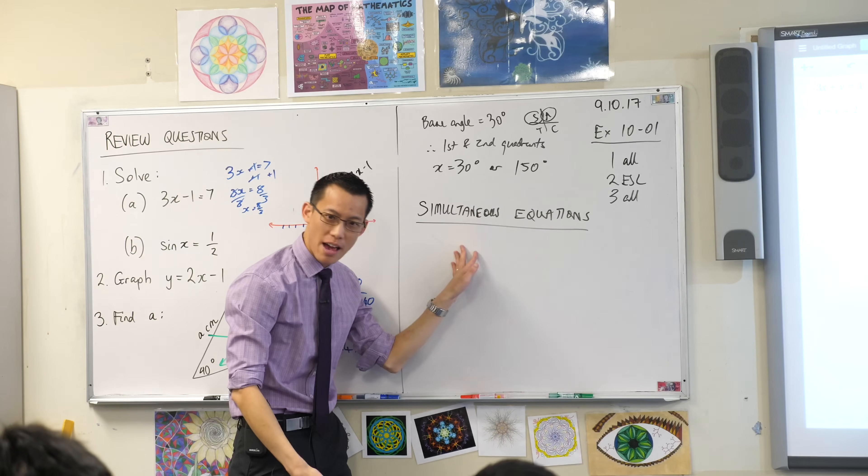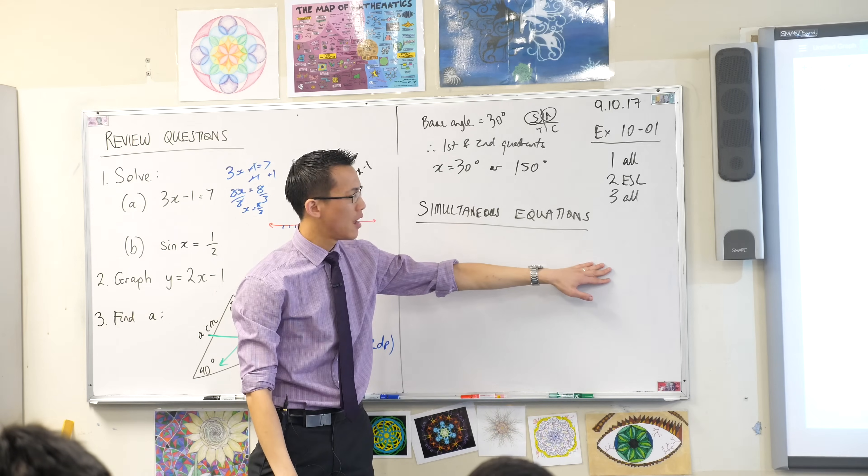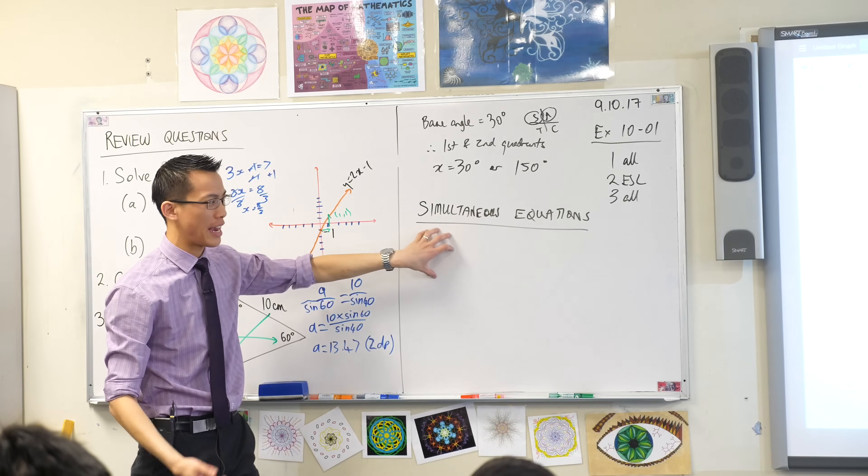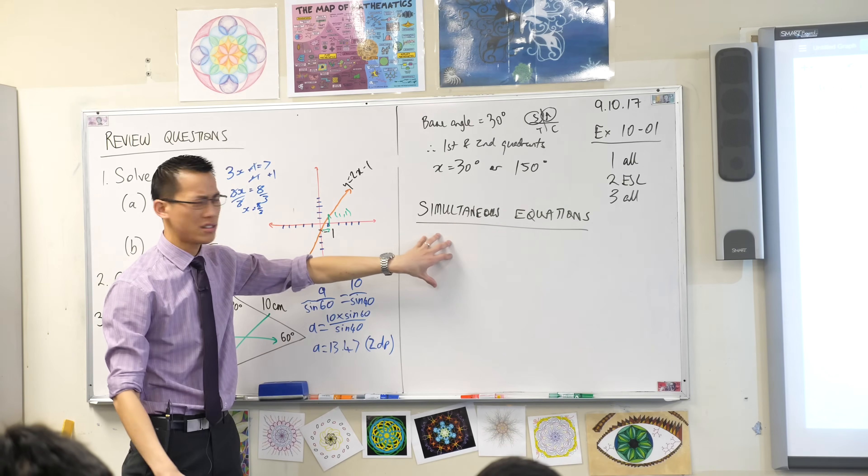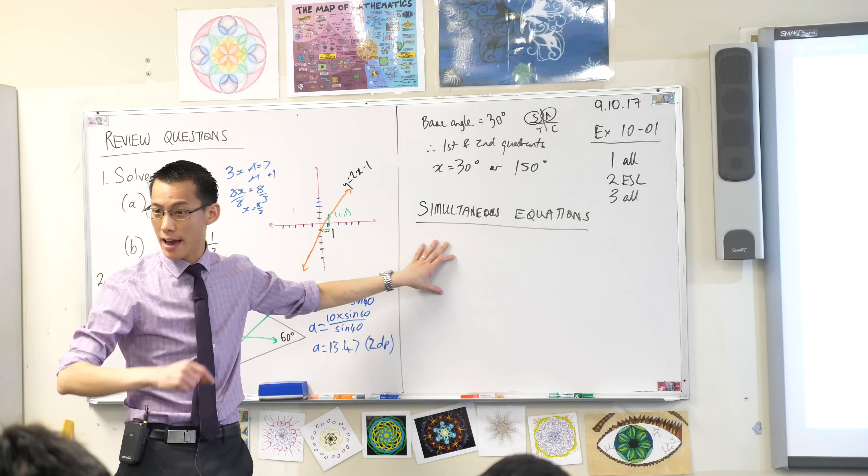So this equation can be graphed. This equation can be thought of as a line. So if you say simultaneous equations, what you're really thinking about is simultaneous lines. Lines that exist at, what does simultaneous mean? At the same time.